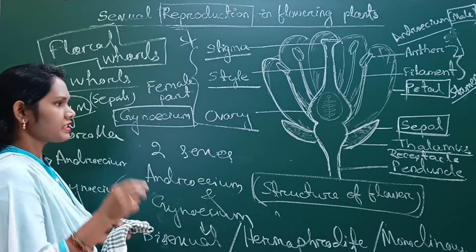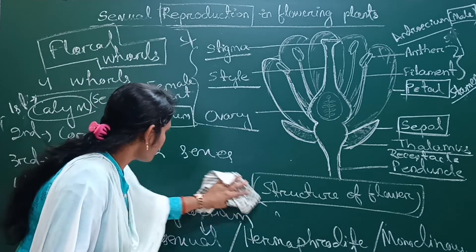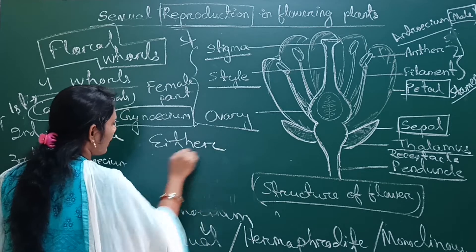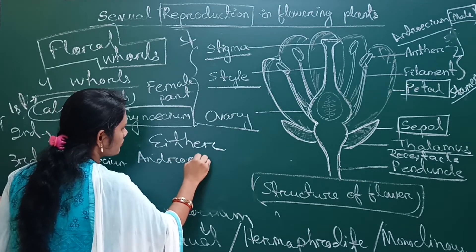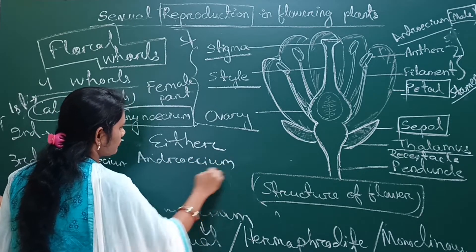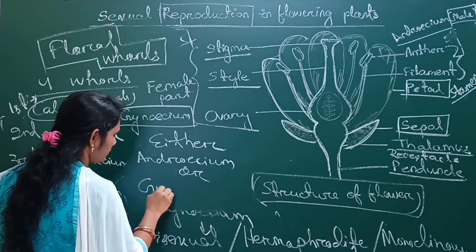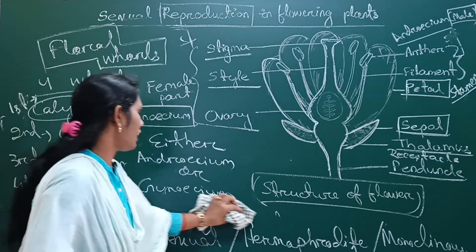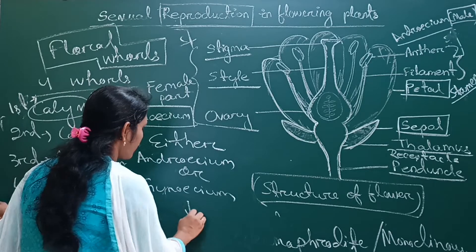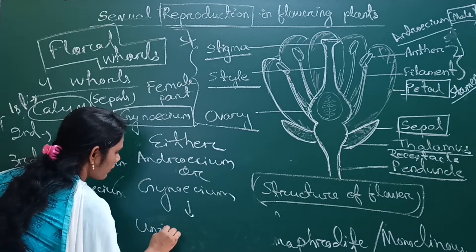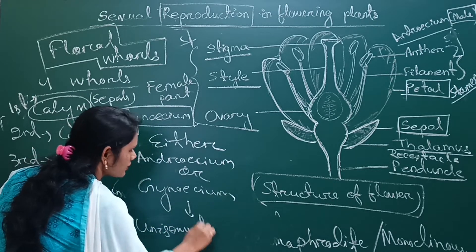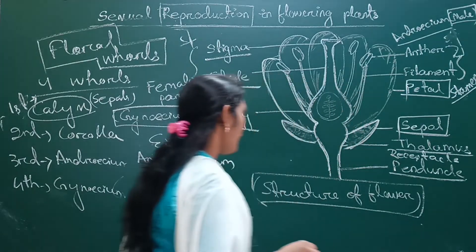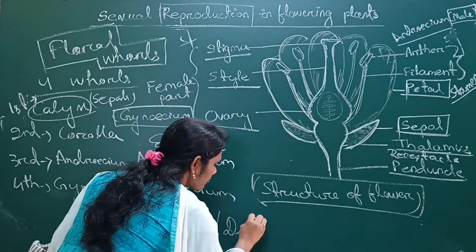If the flower contains only one type of sex — either androecium or gynoecium — then that flower is called a unisexual flower, or diclinus flower. Bisexual flowers are called monoclinus flowers, and unisexual flowers are called diclinus flowers.